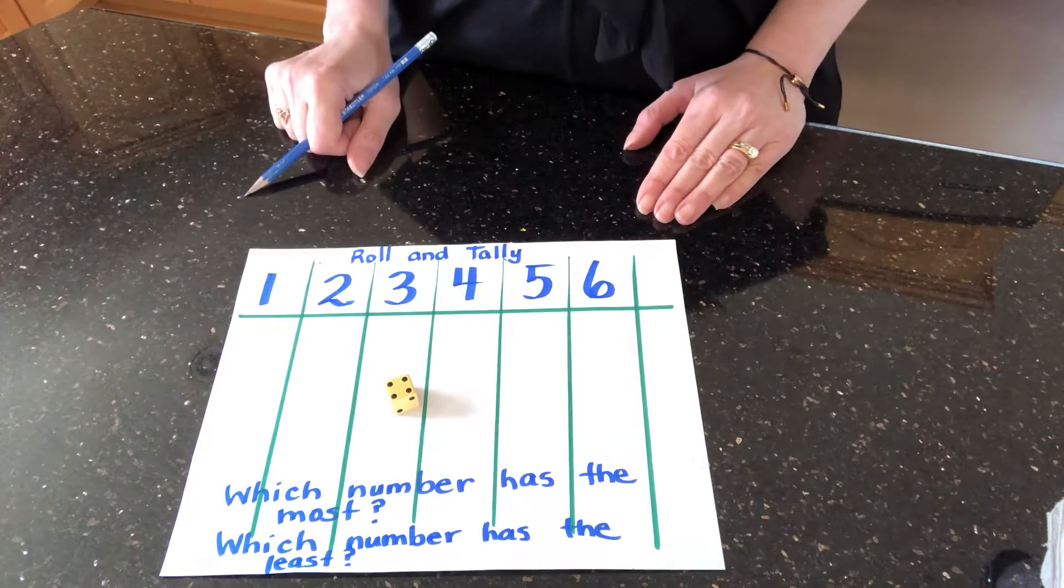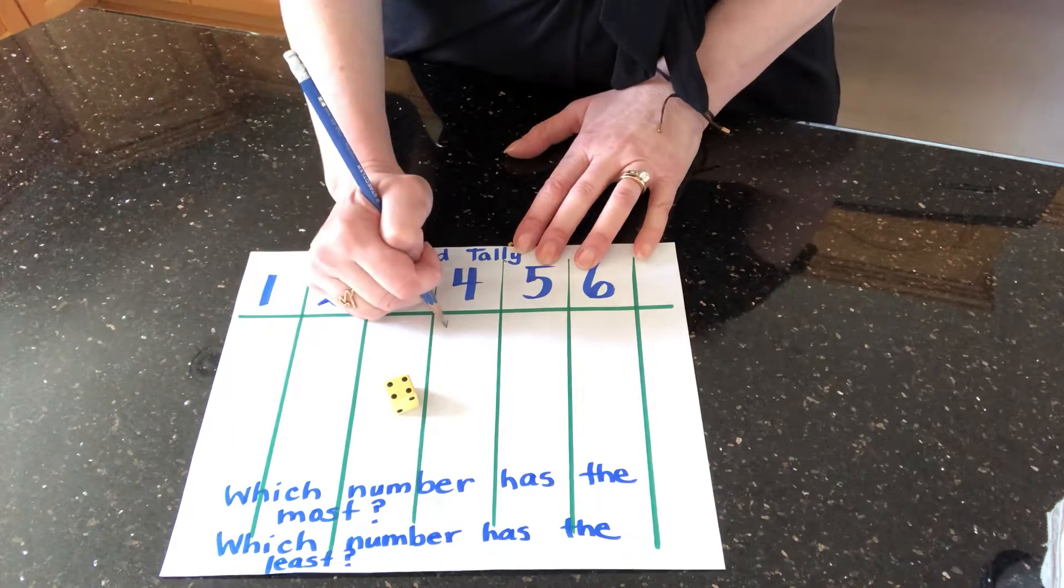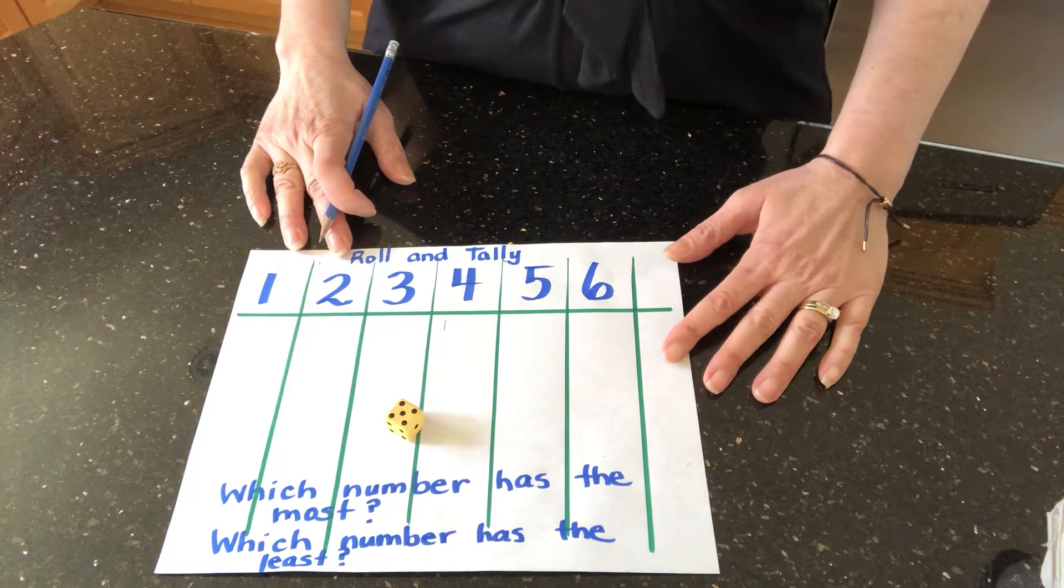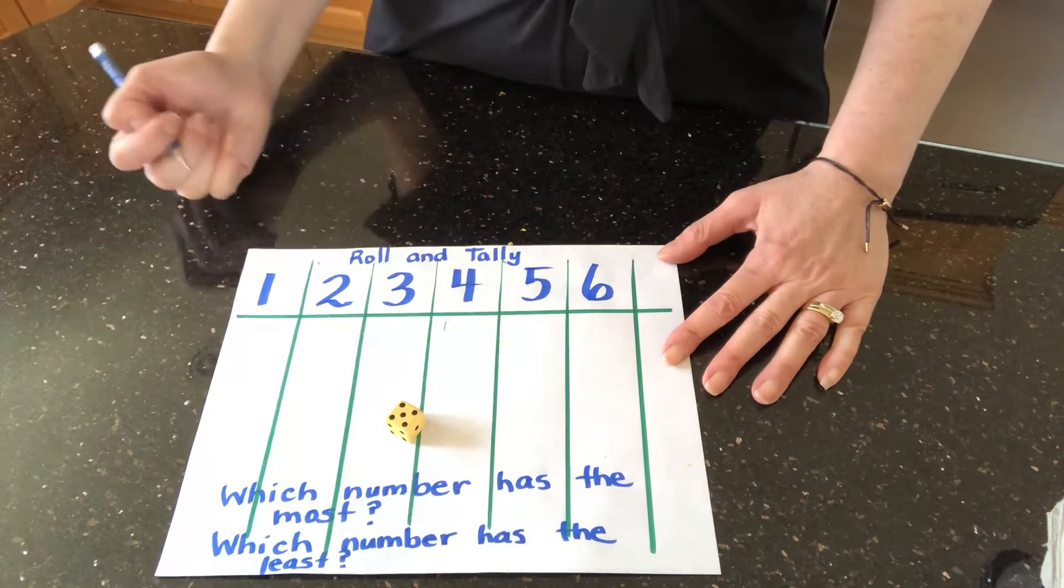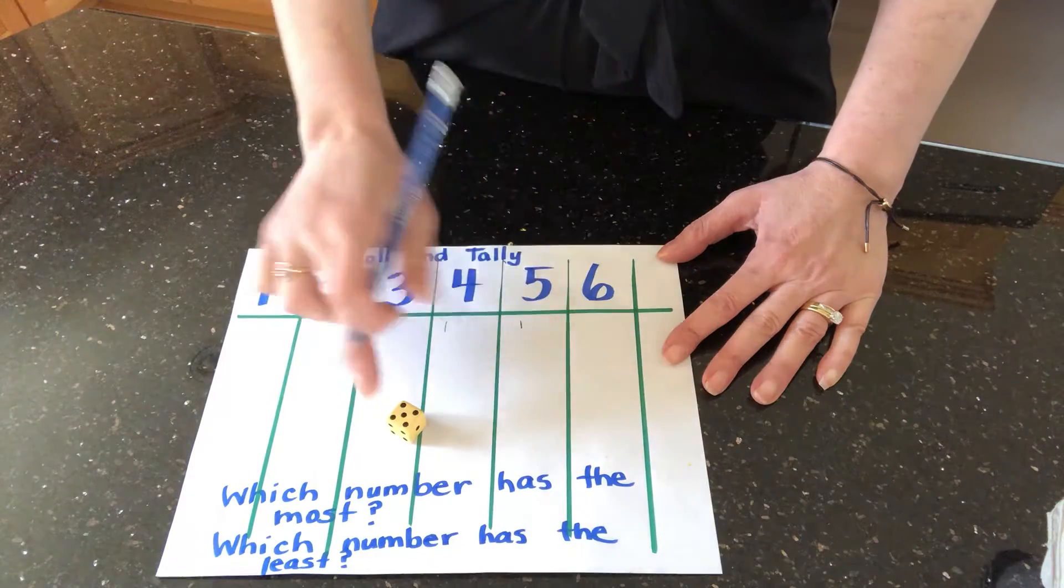So of course we have those dice again. We're going to roll, and I see that's a four, and I'm going to do one tally mark for the four. Then roll it again. We can roll it ten times or twenty times, five, you decide. There's my five, so one tally mark for one roll.